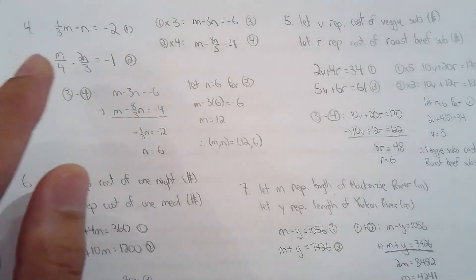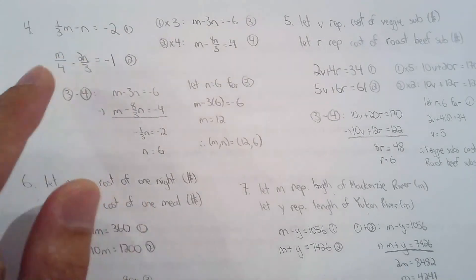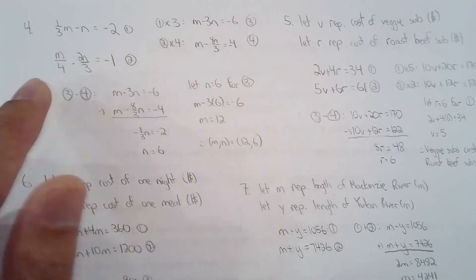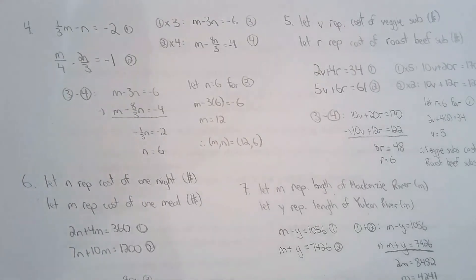So a lot of students first like to clear the denominators. For example, in equation one, they multiply both sides by three, and for equation two, they have to multiply both sides by 12. But then they have to multiply the equations by another set of numbers to eliminate m or n.